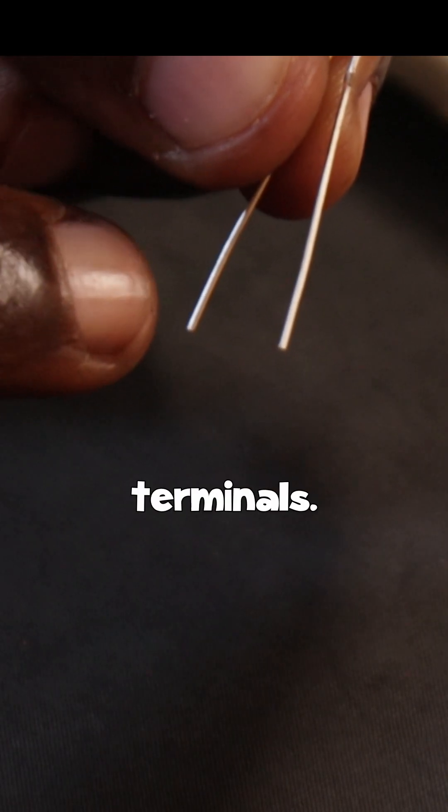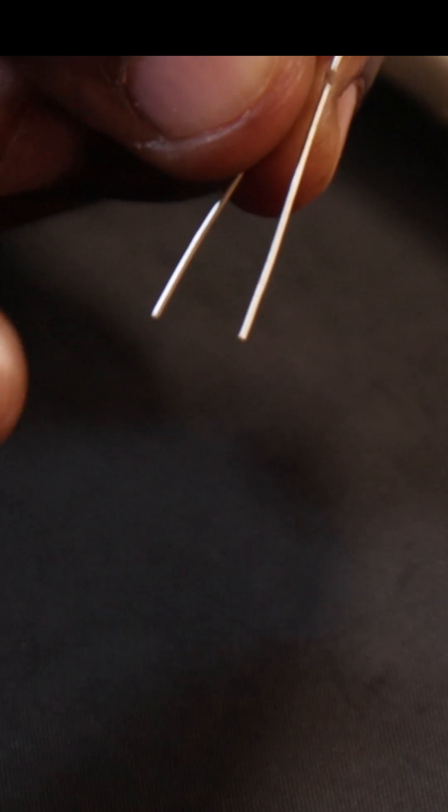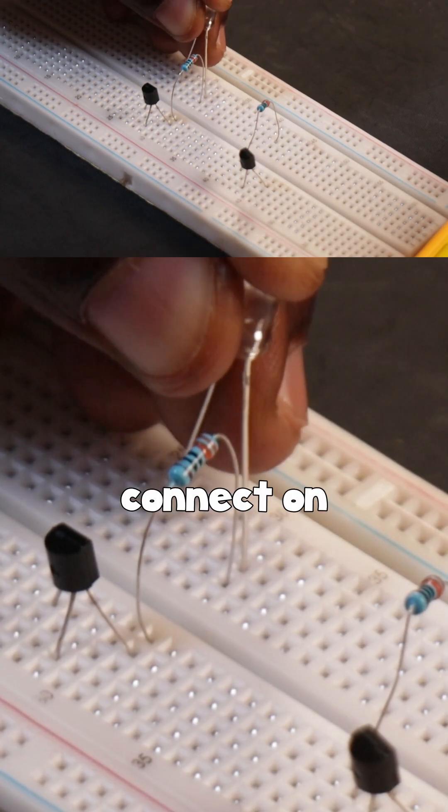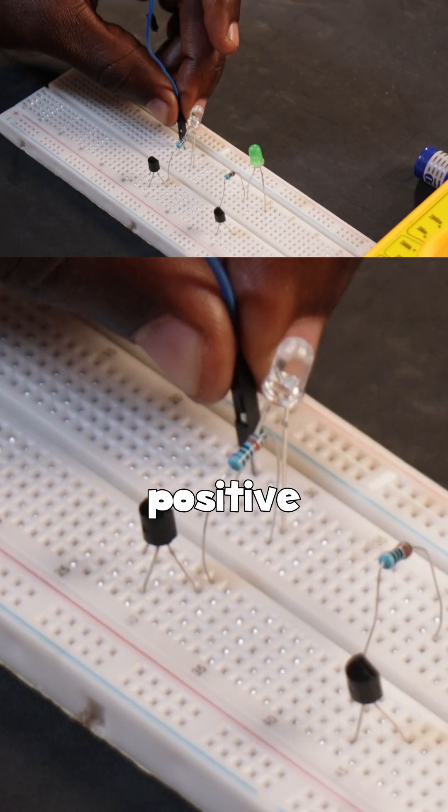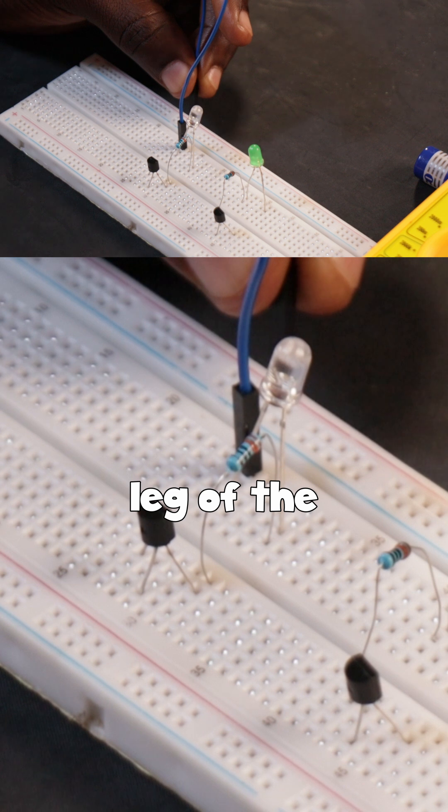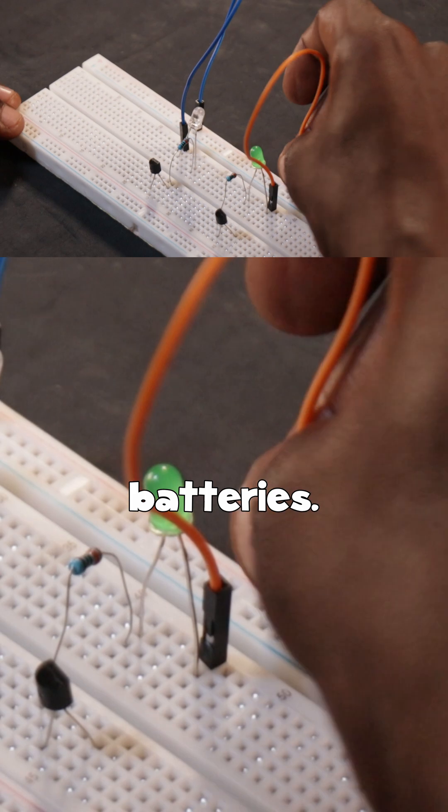The LED has two terminals. The longer terminal is positive and the short one is negative. The negative terminal is the one that we connect to the resistor. The positive leg of the LED is connected to the positive terminal of the batteries.